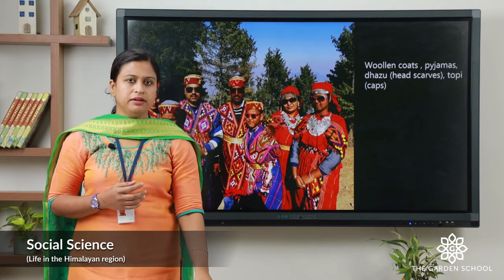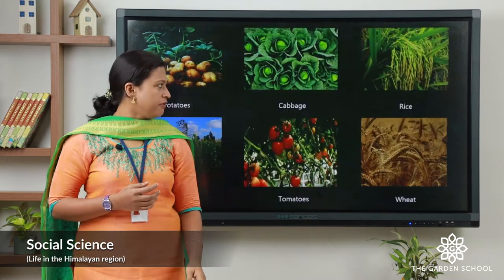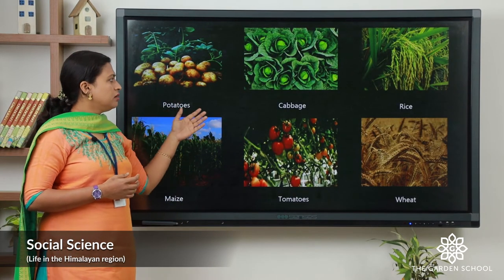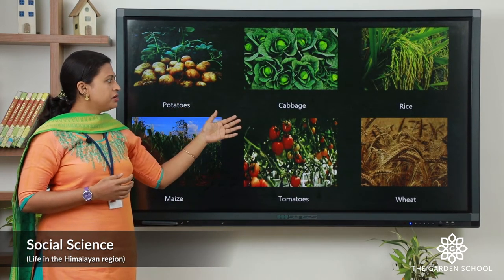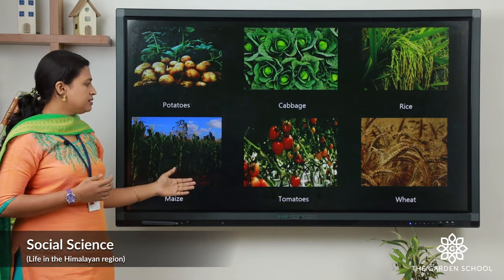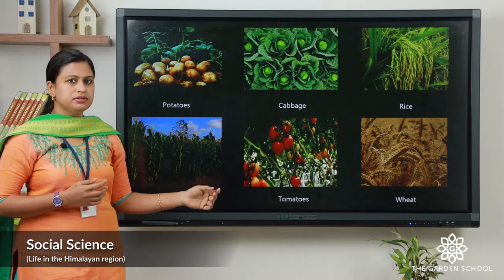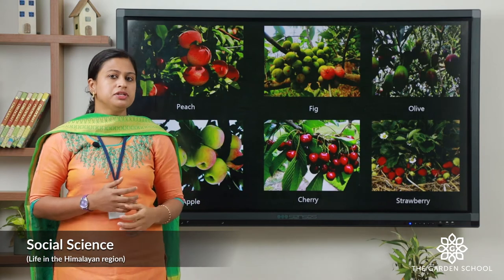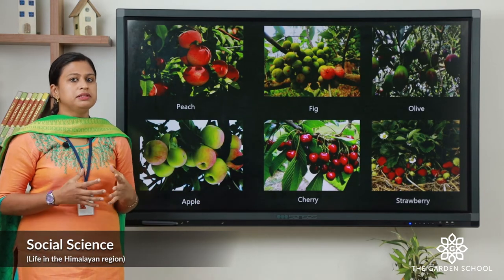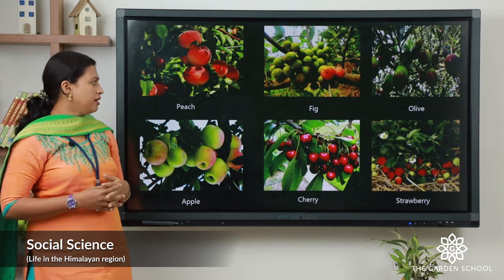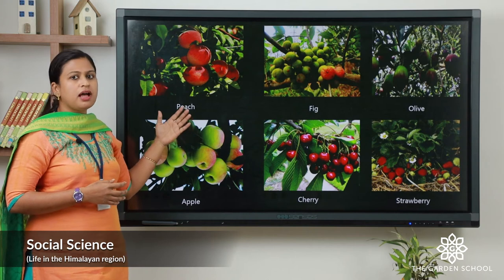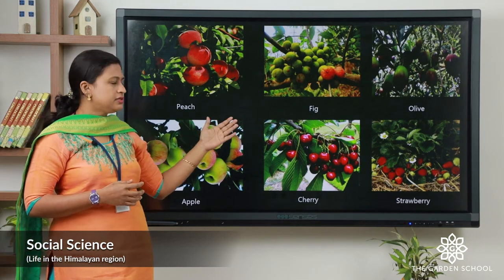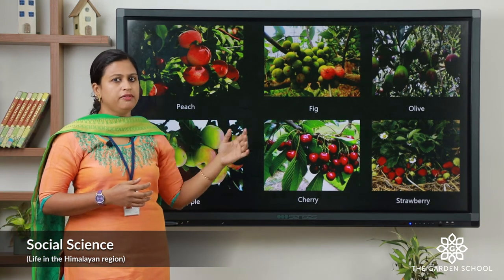The people cultivate different types of crops like seed potatoes, cabbage, rice, maize, tomatoes, and wheat. Himachal Pradesh is also known as the apple state of India. Different fruits are cultivated here like peach, apple, cherry, strawberry, and olive.